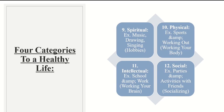The four categories of a healthy life: Number nine is spiritual — not necessarily religious, but doing something you really enjoy, like hobbies such as music, drawing, or singing. Number ten is physical — sports, working out, basically working on your body. Number eleven is intellectual — working your brain through school and work. And social is number twelve — parties, activities with friends, socializing. Studies show you need at least two events in each category per week to really make a difference in your life and mindset.